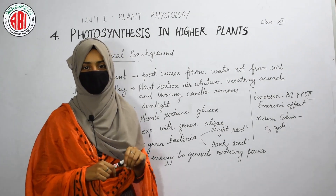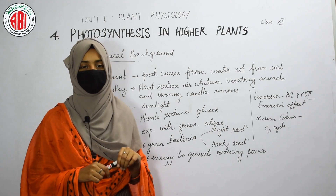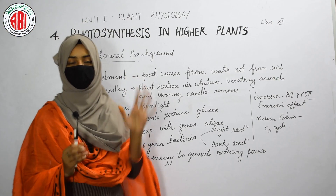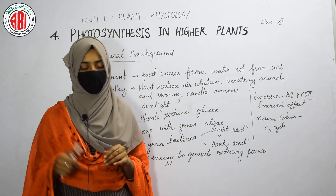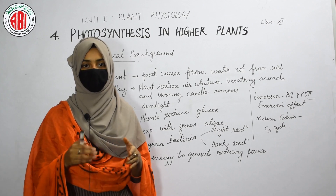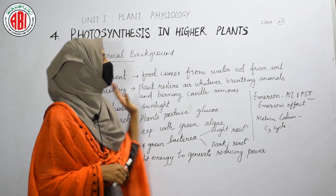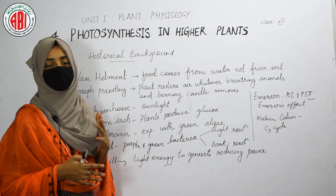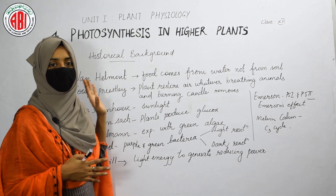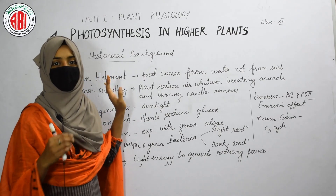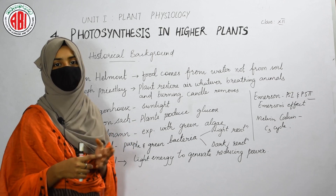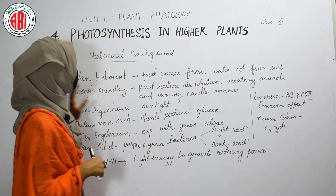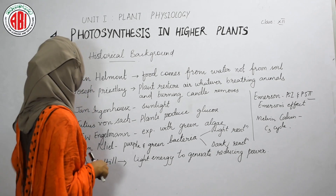Hello everyone, welcome back to my class. This is Romana Ali. I hope you all are doing well. In today's class I'm going to explain about the chapter photosynthesis in higher plants. Photosynthesis is a process by which plants prepare their own food by utilizing sunlight, water, and carbon dioxide. In this chapter we are going to discuss the historical background, different scientists who gave ideas about photosynthesis, and we are going to learn about light and dark reactions.